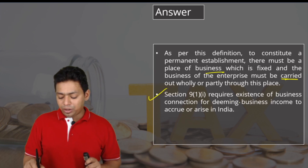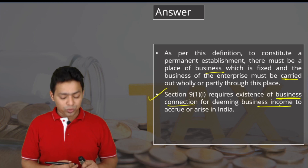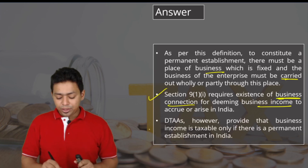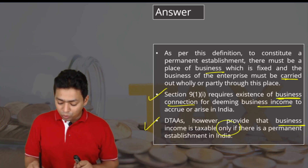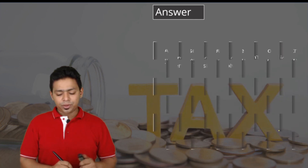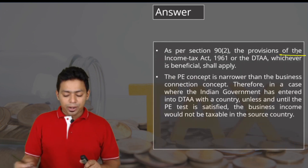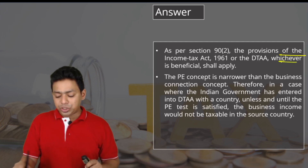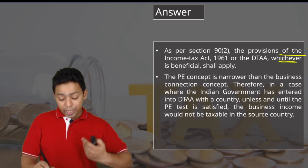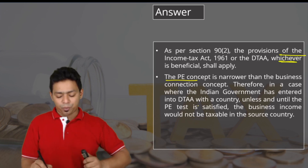Section 9(1)(1) requires existence of business connection for deeming business income to accrue or arise in India, which is a very wide concept. DTAA, however, provides that business income is taxable only if there is a permanent establishment. As per Section 90 of the Income Tax Act, whichever of the Act or DTAA is more beneficial shall apply — therefore the concept of permanent establishment is more important.